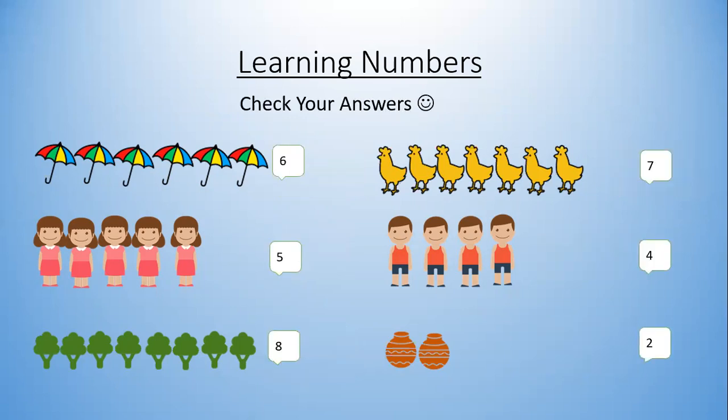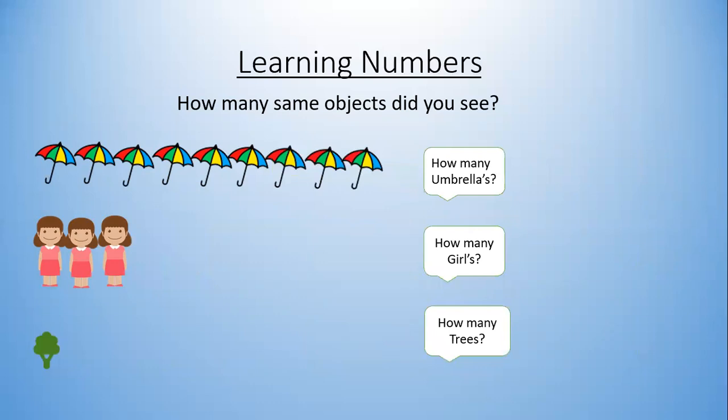We counted six umbrellas — one, two, three, four, five, six. Yes, you are right! How many girls? One, two, three, four, five — five girls. Trees? One, two, three, four, five, six, seven, eight — eight trees. Chickens? One, two, three, four, five, six, seven — seven chickens. Boys? One, two, three, four. Pots? One, two — great job, you did it!